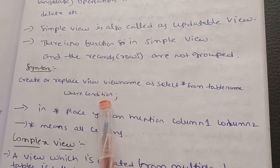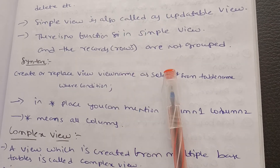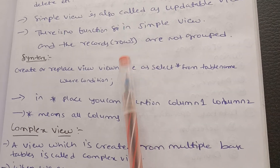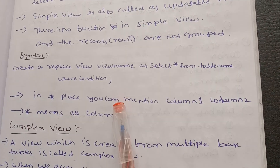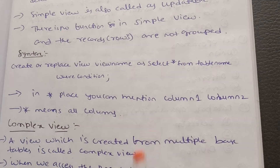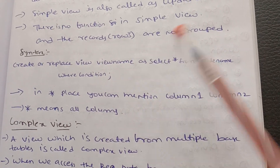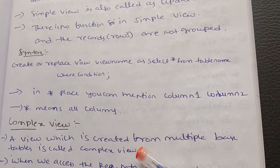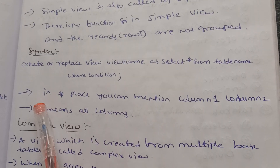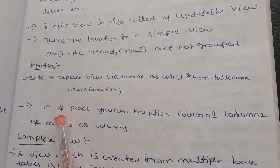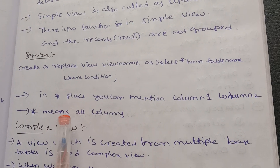First we create a table, then insert details into the table. You can SELECT * FROM the table and all the information will be available — attributes like name, roll number, section, branch. In this simple view syntax, in place of the star you can mention column1, column2, etc.